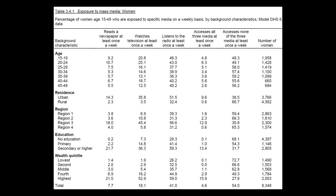Let's find the percentage of women age 15–49 with secondary or higher education that access all three media at least once a week. Draw two imaginary lines — one extending from the row for women with secondary or higher education, and the other extending from the column for accessing all three media at least once a week. This shows that 13.4% of women age 15–49 with secondary or higher education access all three media at least once a week.